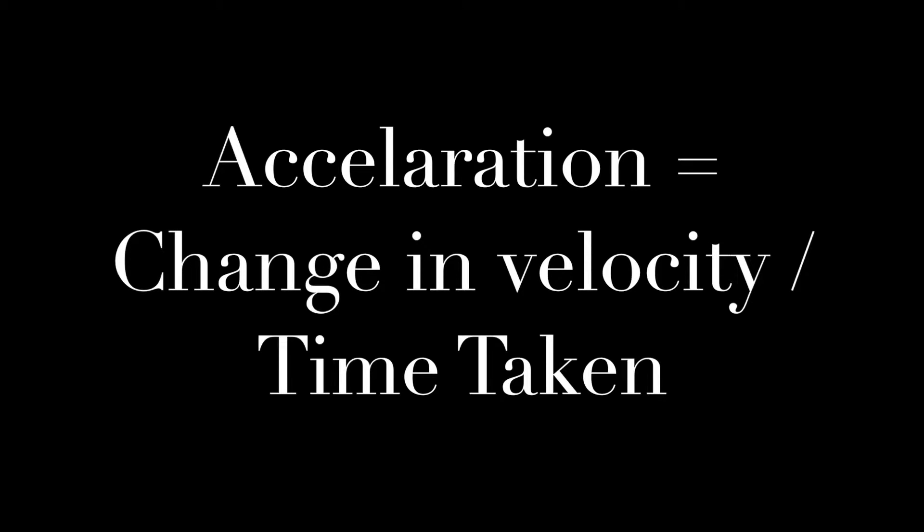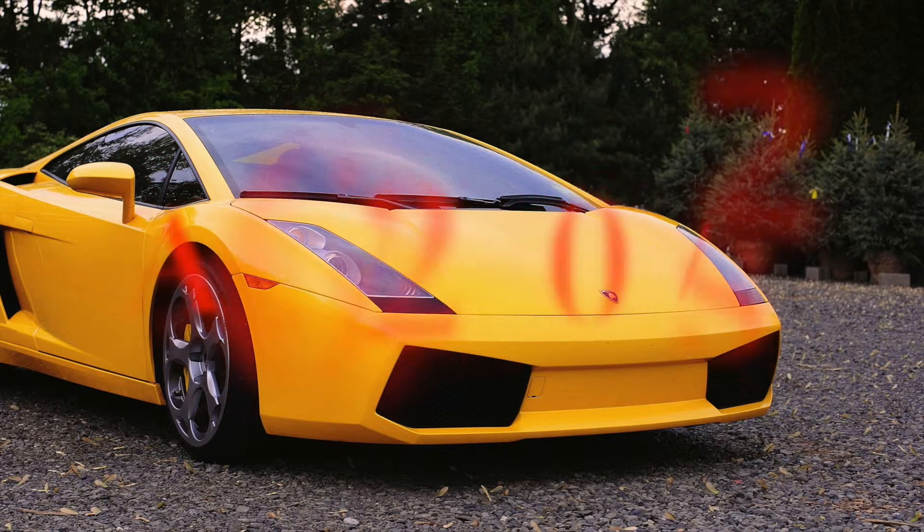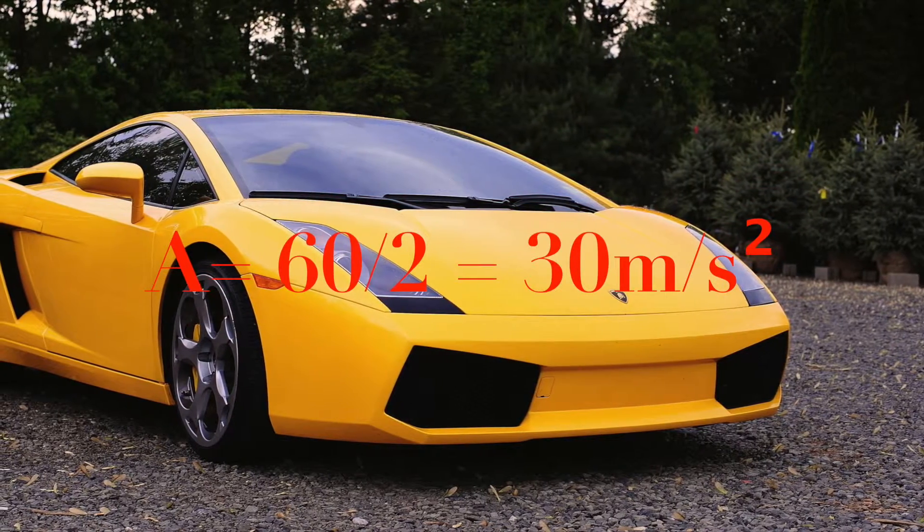You may want to know how to work out the change in velocity. Well it's simple to say that it starts off as stationary. Say a stationary car goes to 60 metres per second in 2 seconds.